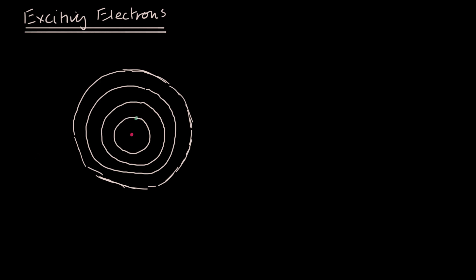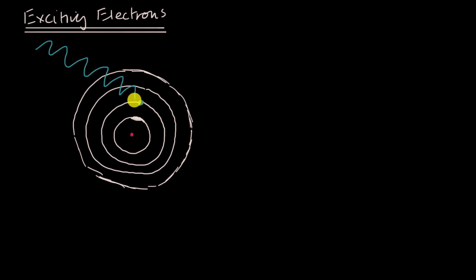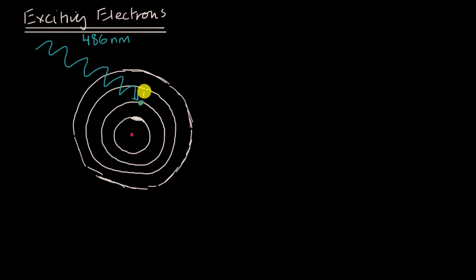Now let's say we're dealing with a hydrogen atom where the electron has already been excited a little bit, so instead of being in the first shell, it's already in the second shell. We're going to hit it with a photon that excites it even more. Light has both particle and wave-like properties; when we think of it as a particle, we think of it as a photon. This light has a wavelength of 486 nanometers, and that photon has sufficient energy to excite this electron from N equals two — the second shell — all the way to the fourth shell.